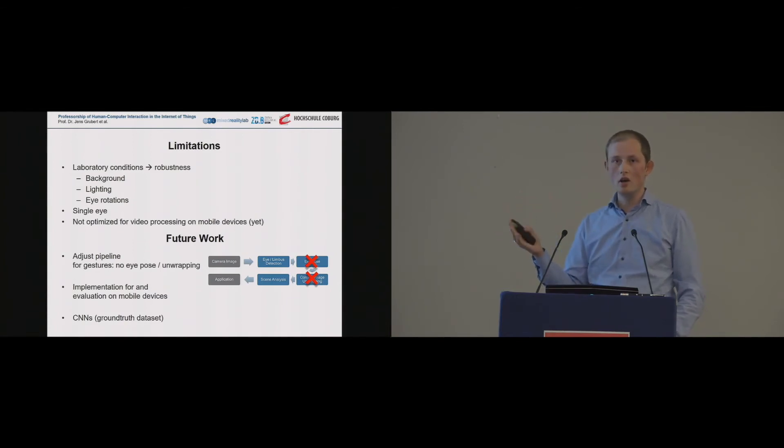So in future work, we actually want to adjust our pipelines. We could, in fact, skip certain parts of the pipeline if we just wanted to use gestures. You don't need to know the eye pose. You don't need to know how the unwrapped image is if you just want to have relative motions. We want to implement it and evaluate on real world mobile devices. And of course, as many of you do, we want to get our hands into deep learning and actually record the ground truth data set. Also with an OptiTrack system to see if somehow automatically a CNN can reconstruct relevant features for us to detect our mobile phone and our fingers.